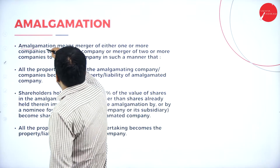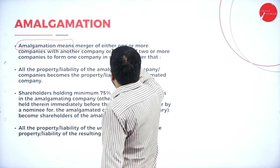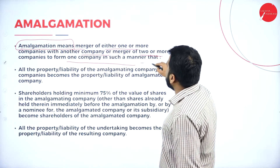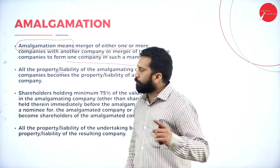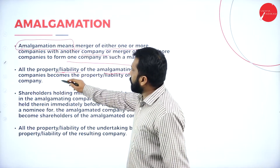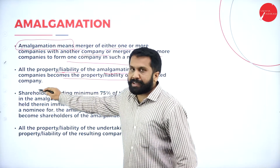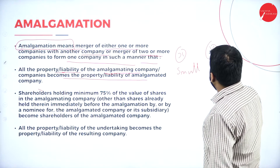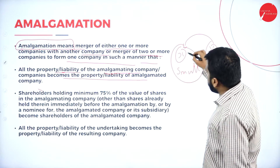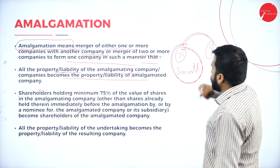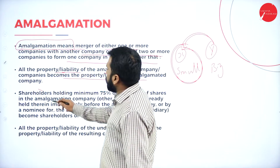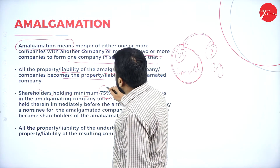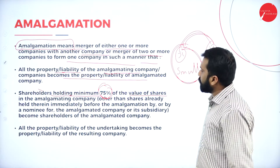Amalgamation means merger of one or more companies with another company, or merger of two or more companies to form one company, in such a manner that all the property and liability of the amalgamating company becomes the property and liability of the amalgamated company. For example, X is the small company and Y is the big company. Y is taking X — all the assets and liabilities of X will become assets and liabilities of Y company.